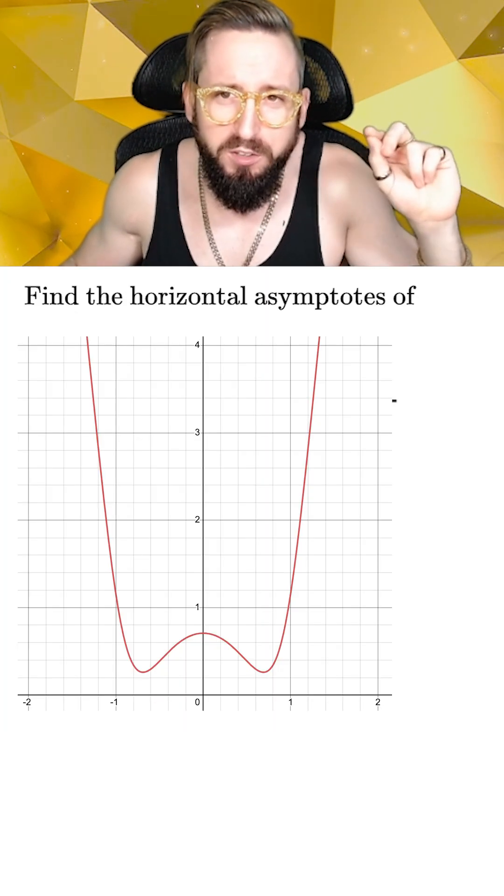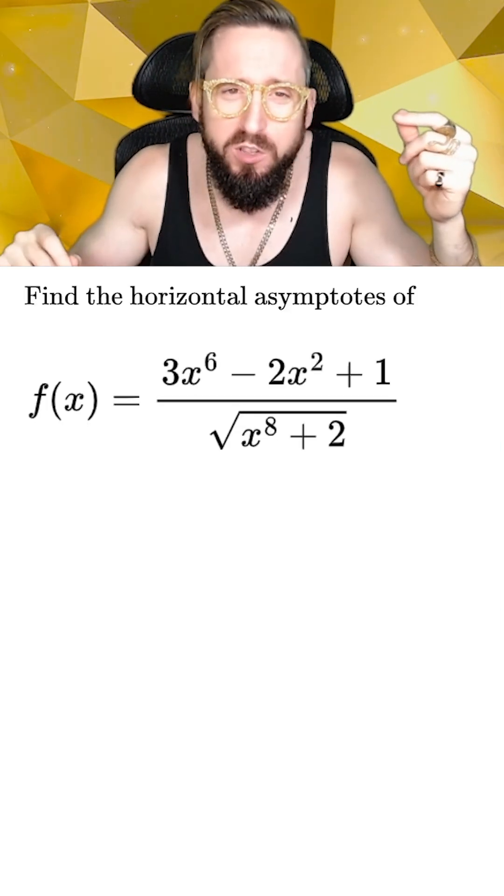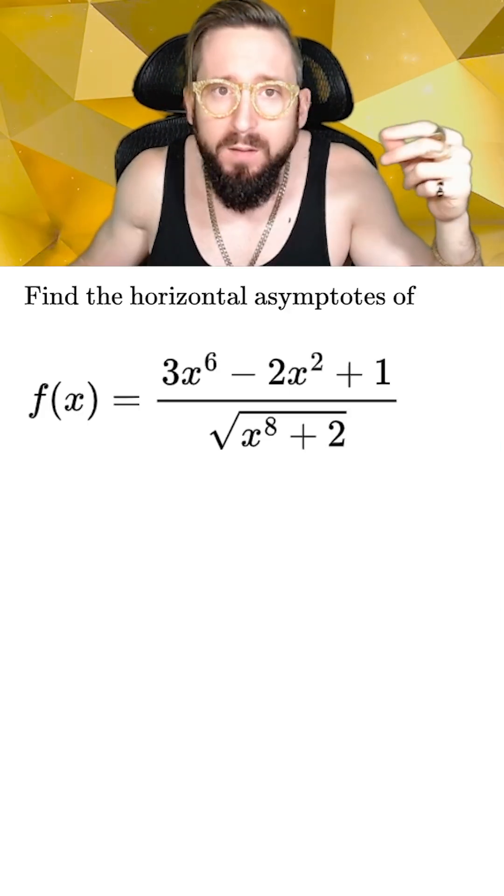Now let's look at the last type of horizontal asymptote. You may be wondering why I keep saying the highest effective power of x. Well, that's because you can't always just look at what's the biggest number in the exponent. Take this function, for example.